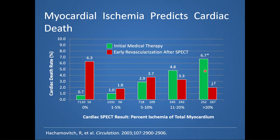In contrast, when patients undergo early revascularization by PCI — which is meant to relieve myocardial ischemia — and undergo further assessment, the cardiac death rate decreases, particularly in those patients with the most ischemia. This sets the context for why PCI is so important and why it may offer a mortality benefit, though that remains very controversial.